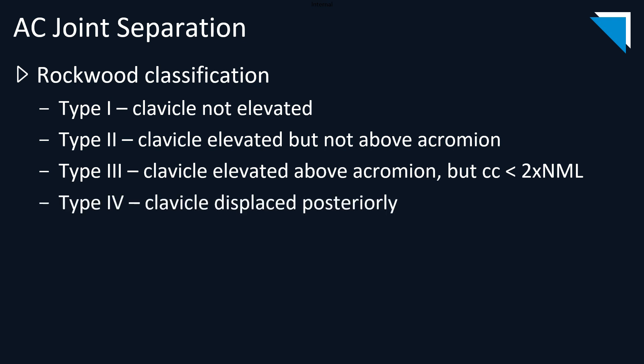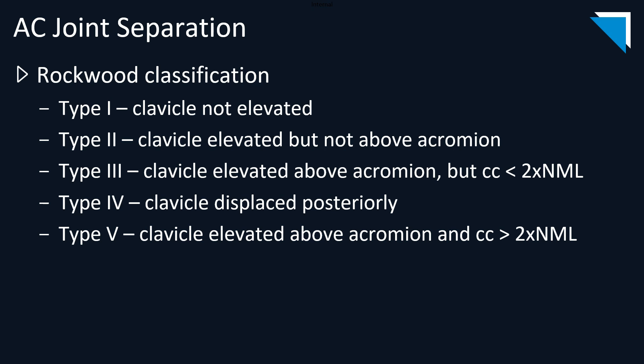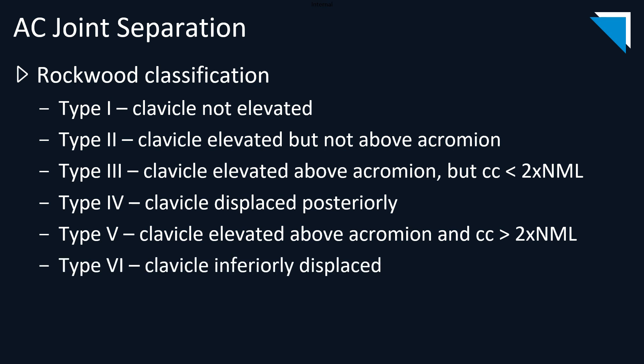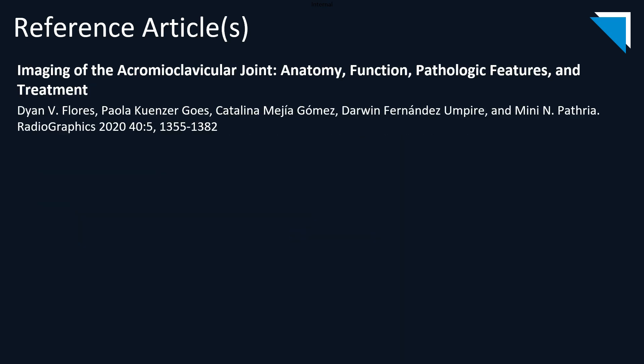Type 4 injuries involve posterior displacement of the distal clavicle. Type 5 injuries involve more significant superior displacement of the distal clavicle with greater than two times the normal coracoclavicular interval. And finally, type 6 injuries involve inferior displacement of the distal clavicle. This Radiographics article gives a great overview of the various acromioclavicular joint separation injuries.